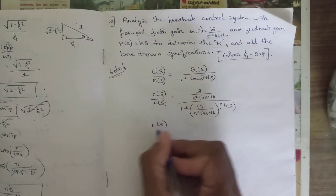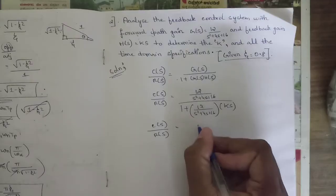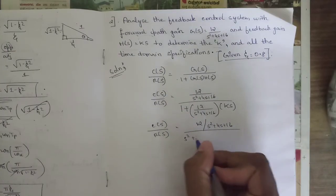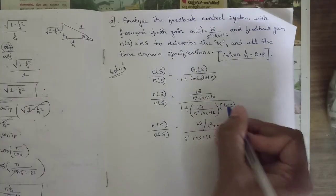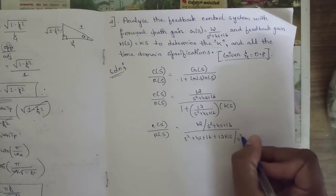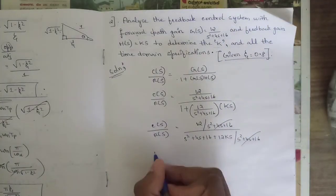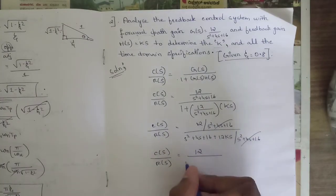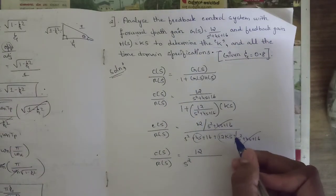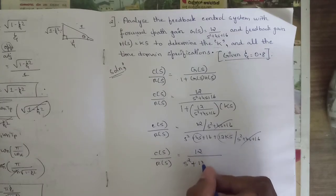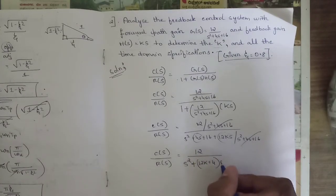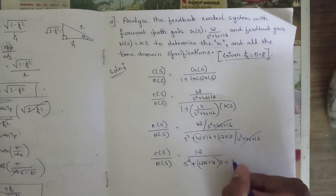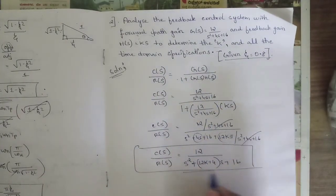Simplifying, C(s)/R(s) equals 12/(s² + 4s + 16) divided by taking LCM: [s² + 4s + 16 + 12Ks] / (s² + 4s + 16). The (s² + 4s + 16) terms cancel, giving C(s)/R(s) = 12 / [s² + (12K + 4)s + 16]. Here s is common in the middle terms, so we write (12K + 4) together with the constant 16.